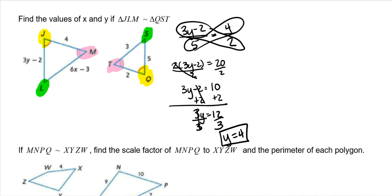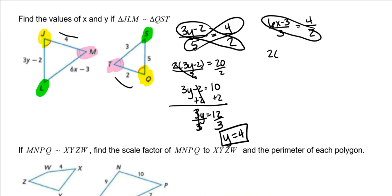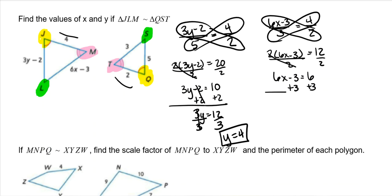Now we find x the same way. Pink-green is (6x − 3) over pink-green on the other side, which is 3, set equal to yellow-pink (4) over yellow-pink on the other side (2). Cross-multiplying: 2 times (6x − 3) equals 3 times 4, which is 12. Dividing both sides by 2 gives 6x − 3 = 6. Adding 3 to both sides: 6x = 9. Dividing both sides by 6 gives x = 3/2.